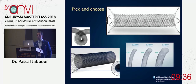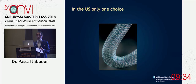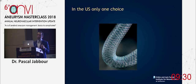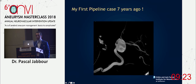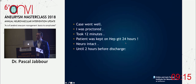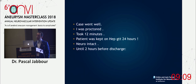There are a lot of flow diverters on the market — you can pick and choose. Unfortunately, in the US only one is FDA-approved, which is the pipeline. The rest were in a trial, and now we're waiting for approval. I always like to start with my first pipeline case seven years ago — a physician at my hospital who had a symptomatic cavernous aneurysm. The procedure went well; for the first five cases you need to be proctored, so I was proctored.